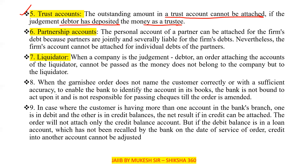The sixth point is partnership accounts. The personal account of a partner can be attached for the firm's debt, because partners are jointly and severally liable for the firm's debt. Nevertheless, the reverse is not true — the firm account cannot be attached for the individual debts of the partners.